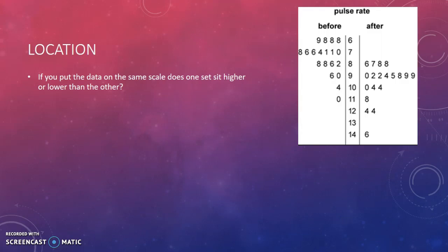For example, here is some back-to-back stem and leaf plots about pulse rate. You can see up here it's talking about before and after, so I'm assuming that means before exercise and after exercise. You can see that before exercise, the heart rate was much lower. It sits between 68 beats per minute to 110 beats per minute.